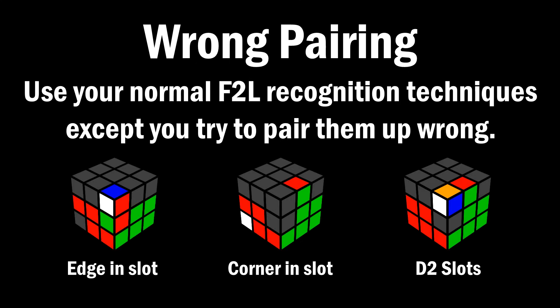Wrong pairing is the way that most people first think of to try and recognize pseudo-slots, but it is actually the wrong method. Don't do it. The reason I even bring up wrong pairing is because I know people do this when they first try to pseudo-slot, and I am telling you here that this is not the method you want to use to recognize, because it is slow and you will mess up very often.